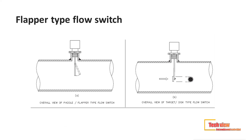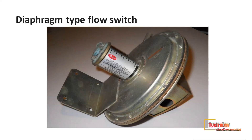When the flow is generated in the process line, the force will act at the flapper and swing it away. This causes the magnet's position to change in relation to the reed contact, triggering the contact.